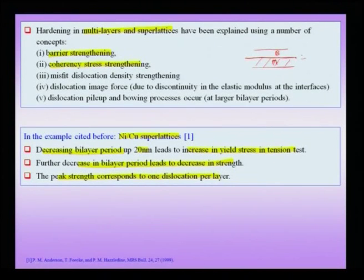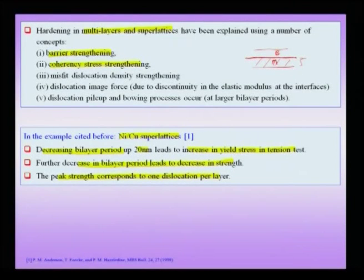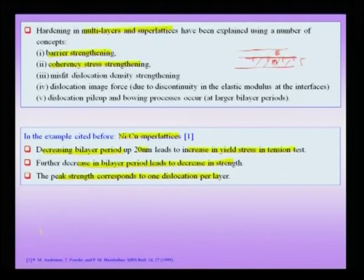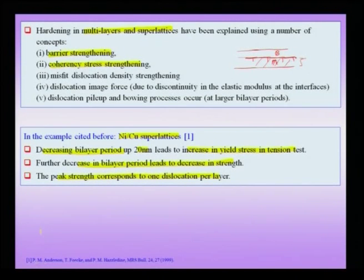If the bilayer period becomes large and the system starts coherent, it will no longer remain coherent at large thickness. Misfit dislocations decorating the interface can appear, making the system partially coherent. Such misfit dislocations — which are structural dislocations, not statistically stored dislocations in the bulk — would tend to give rise to a hardening effect contributing to the additional hardness of the material at the nano scale.